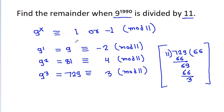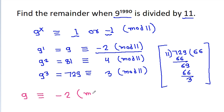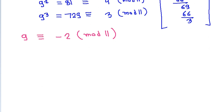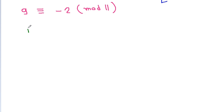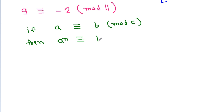But in these 3 cases, I am not getting 1 or minus 1 mod 11. So I will take the second simplest, that is minus 2 mod 11. So 9 is equivalent to minus 2 mod 11. And if a is equivalent to b mod c, then a power n is equivalent to b power n mod c.